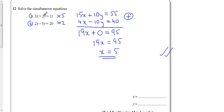So, if I do 3 times my x, which is 5, plus 2y equals 22. So, 15 plus 2y equals 22.